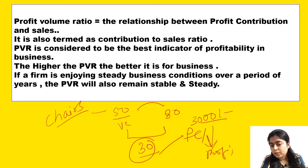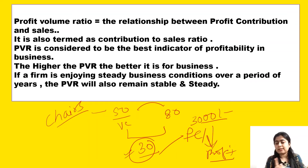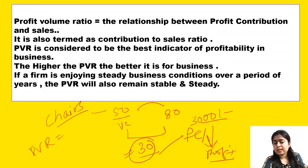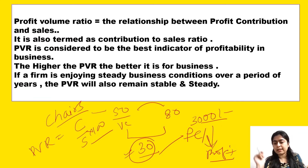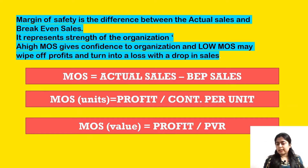So from the rupees 30 contribution per unit, he first pays the fixed cost, and the amount left after paying fixed cost is called profit. Therefore contribution is not profit. PVR is calculated as contribution divided by sales, multiplied by 100.